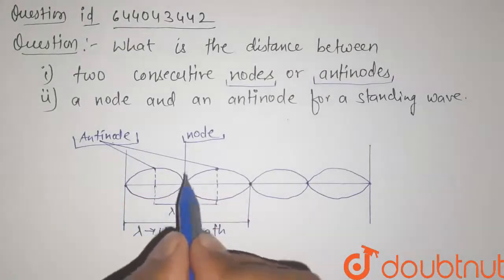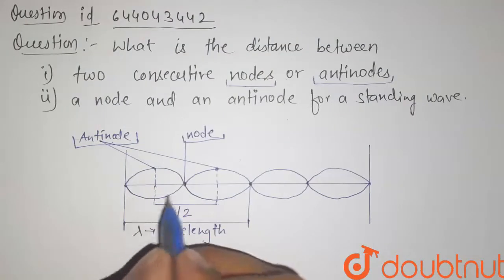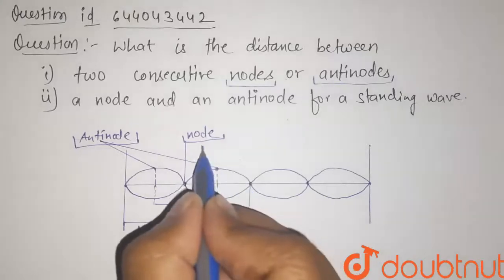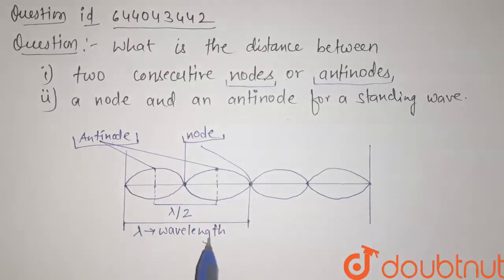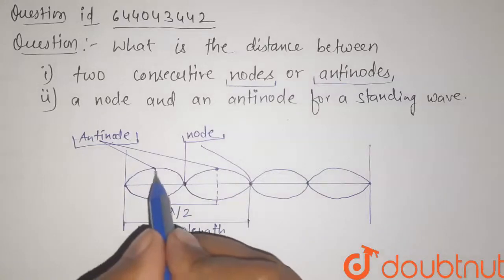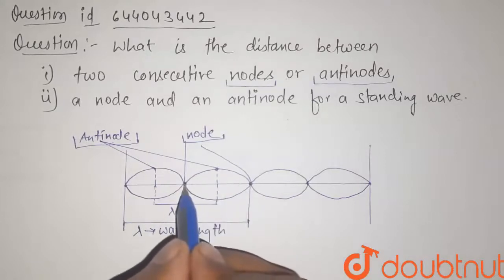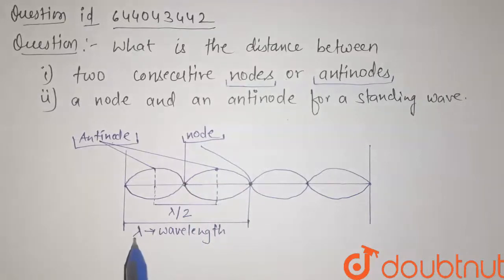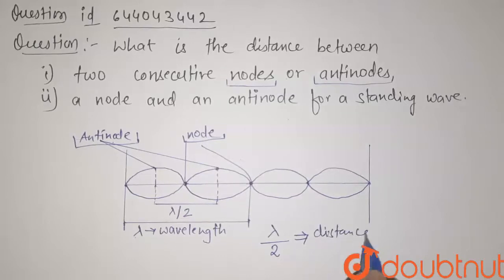Now we have to find the distance between two consecutive nodes or antinodes in this standing wave. Here we can see that this point is a node and this point is also a node. Lambda is the wavelength which is the distance traveled by the wave in one complete cycle. During these two consecutive nodes, the half cycle gets completed. So the distance between two consecutive nodes will be lambda by 2.